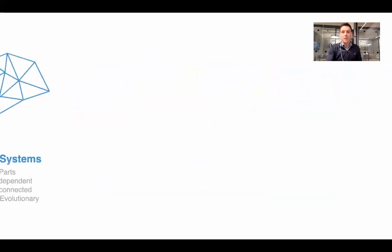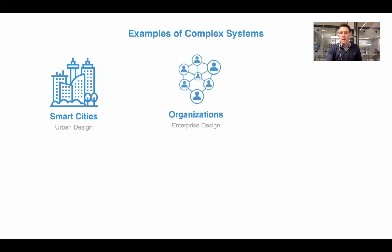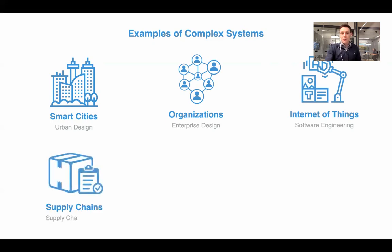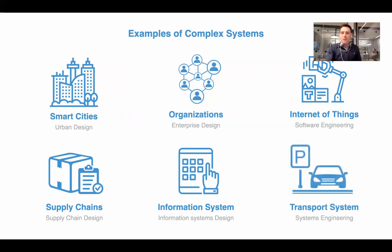We'll take a look at some examples of complex systems in the context of systems we're trying to design. There are many complex systems out there that we aren't trying to design — flocks of birds, society — but here are examples of ones we are designing. A smart city in urban design is a complex system we're starting to try to design. Organizations, with organization design and enterprise design, are certainly complex systems. Internet of things, software engineering, supply chains, information systems, and transport systems are all good examples of complex systems we're trying to design.